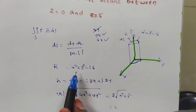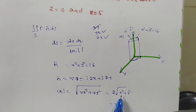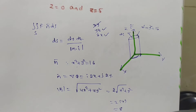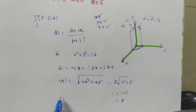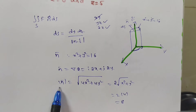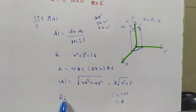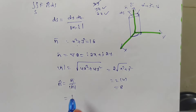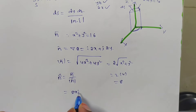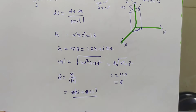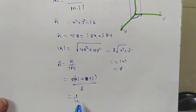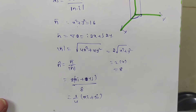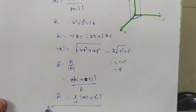So |n̄| = 8. Now n̂ = n̄ / |n̄| = (2xi + 2yj) / 8. Taking 2 common from the numerator gives n̂ = (1/4)(xi + yj). This is the outward unit normal vector.